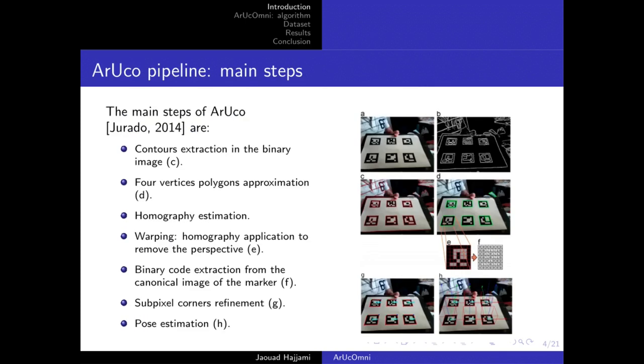The main steps of AruCo for marker detection are contour extraction performed on the thresholded image, then polygon approximation is executed filtering out polygons without four vertices. The next step is homography estimation and application to remove the perspective of the marker, which allows us to extract the binary code of the marker for identification. Once identified, corner refinement and pose estimation are performed.